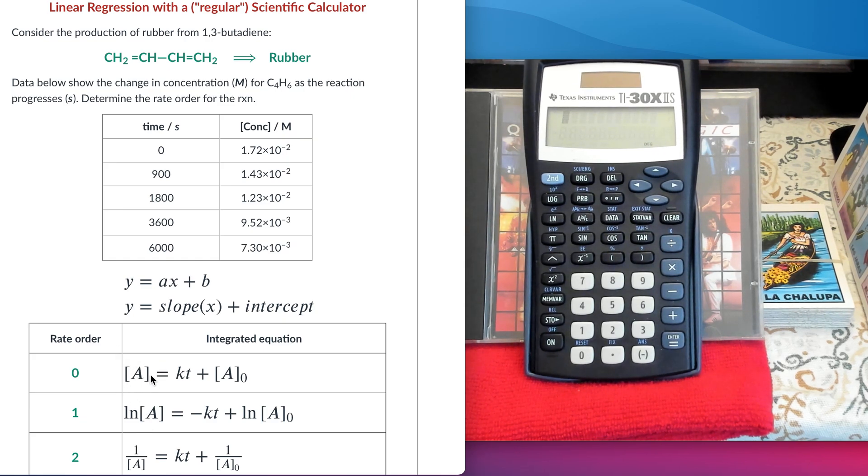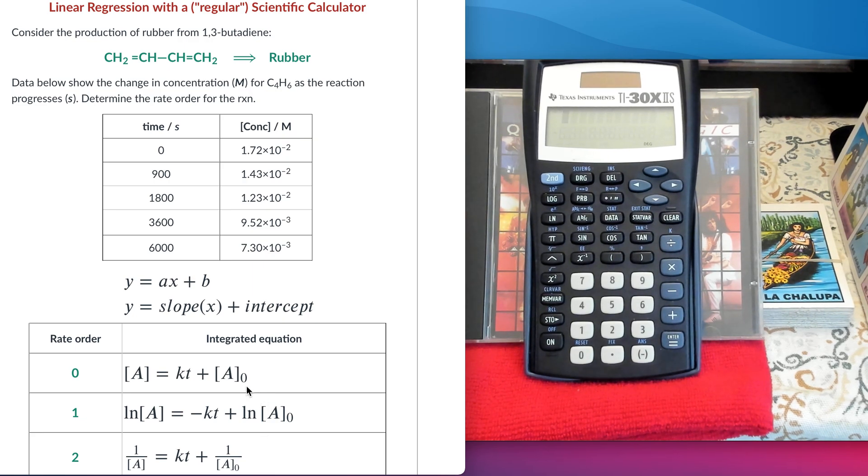We have three different models, all of them integrated rate laws in the straight line fashion for zero, first and second order. Each of them, you're going to see that the independent variable corresponds to the time. The y-axis or dependent variable is something related to concentration - concentration straightforward for zero order, the natural log of the concentration for first order, and the inverse of the concentration for the second order. The slope in every single case is related to the rate constant for the reaction, and the intercept is the parameter that has to do with the initial concentration of your experiments.